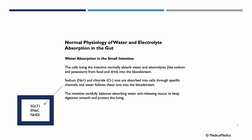Before diving into the pathophysiology of cholera, let us briefly review normal physiology of water and electrolyte absorption in the gut, specifically water absorption in the small intestine. The cells lining the intestine normally absorb water and electrolytes, like sodium and potassium, from food and drink into our bloodstream.